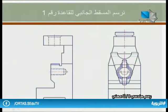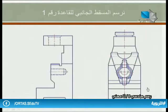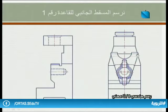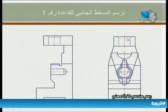نرسم المسقط الجانبي للقاعدة رقم واحد بنفس الطريقة. الشكل يبين المسقط الجانبي لجميع أجزاء دليل التثقيب، والمطلوب رسم المسقط الجانبي للقطعة رقم واحد فقط، فنقوم بحذف بقية الأجزاء المجاورة.